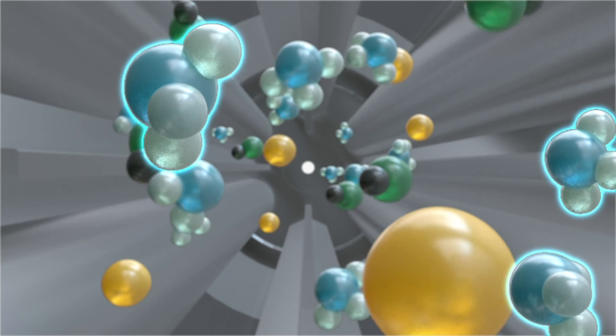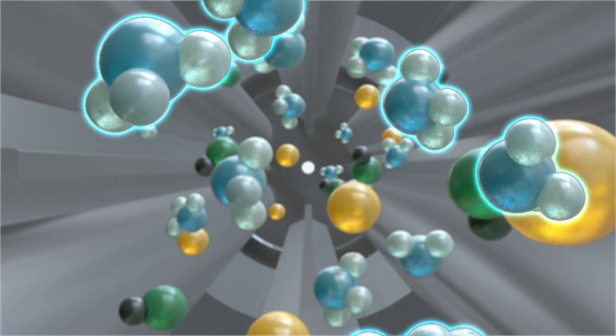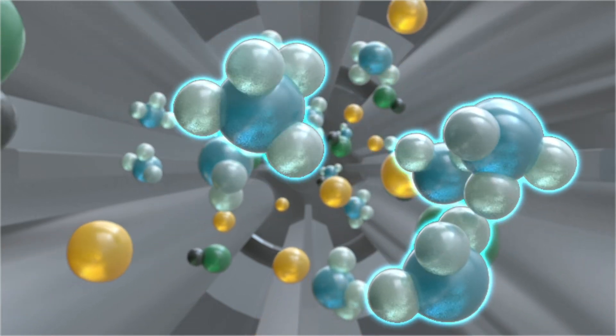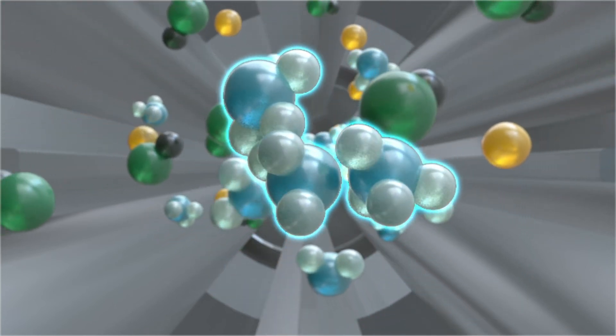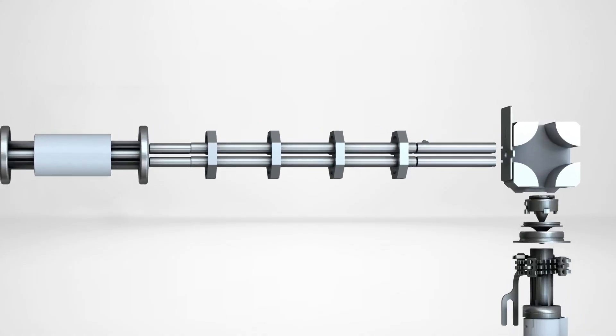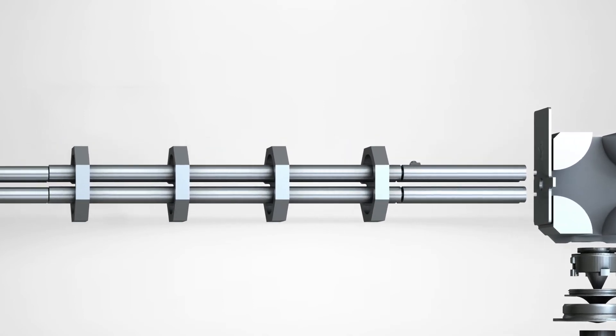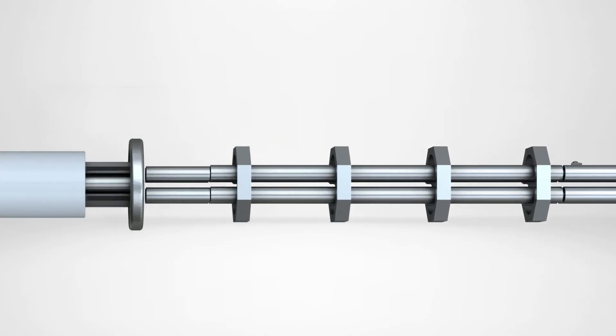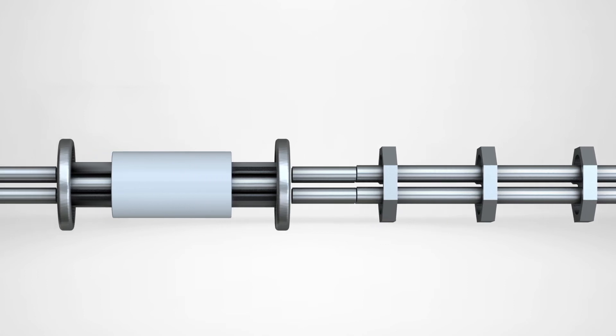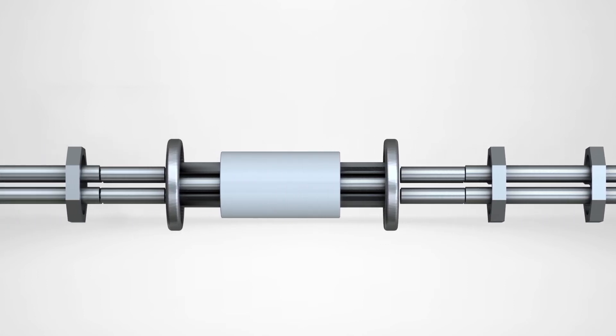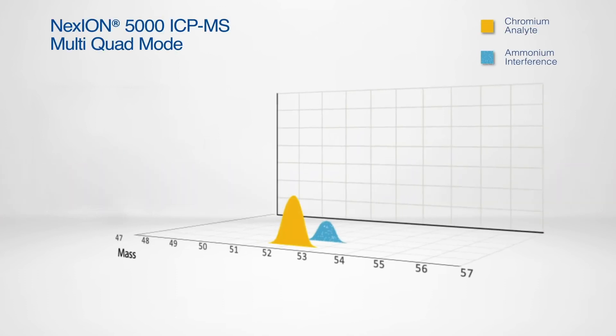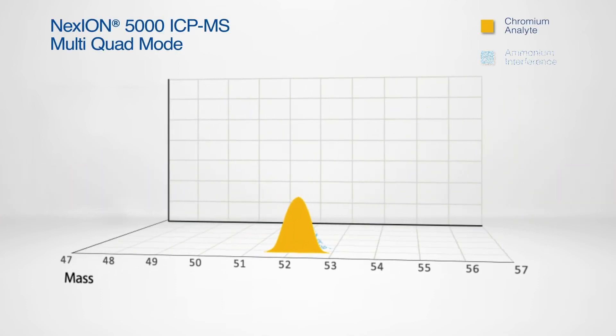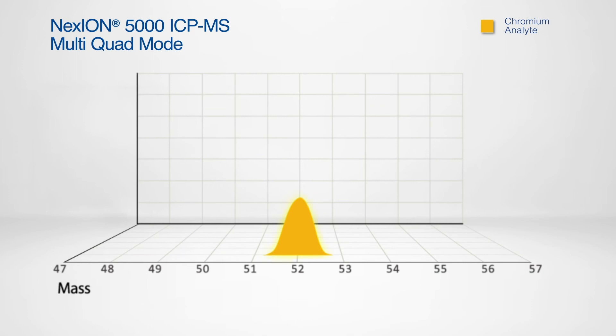This cell actively destabilizes and ejects reaction byproducts before they have a chance to react and form new interferences. This means that the Nexion 5000 is the only ICP-MS to not only offer fine control over what enters the cell, but also controls the reaction within the cell. For superior interference removal, say goodbye to false positives and achieve absolute confidence in your results.